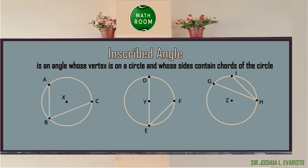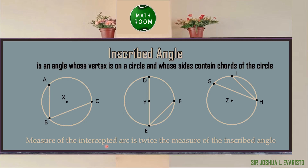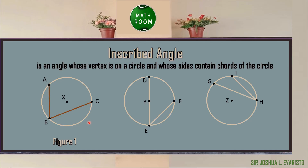Let's learn about the inscribed angle. It is an angle whose vertex is on the circle and whose sides contain chords of the circle. Always remember that the measure of the intercepted arc is twice the measure of the inscribed angle. An intercepted arc is an arc that lies in the interior of the inscribed angle and has its endpoints on the angle. On figure number 1, circle X, angle ABC is an inscribed angle and the intercepted arc is arc AC. If angle ABC is 65 degrees, therefore the measurement of the intercepted arc is 130 degrees.